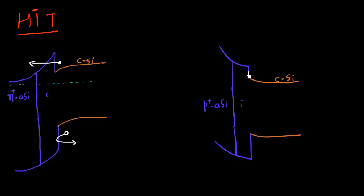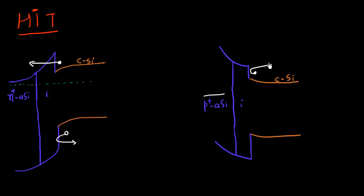Similarly, if we want to make a selective contact for collecting holes, we still keep the intrinsic layer at the interface with the crystalline silicon — that gives good surface recombination velocity — but we place a P-plus layer on top of it. For electrons, which love to travel down the hill, when they reach this contact they are repelled back by the conduction band offset and the electric field present there. This arrangement also assists in the collection of holes, which can tunnel through the intrinsic layer and get collected in the P-plus amorphous silicon layer.